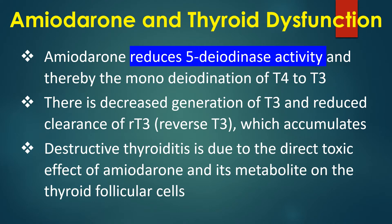Amiodarone reduces 5-deiodinase activity and thereby the mono-deiodination of T4 to T3. There is decreased generation of T3 and reduced clearance of reverse T3, which accumulates. Destructive thyroiditis is due to the direct toxic effect of amiodarone and its metabolite on thyroid follicular cells.